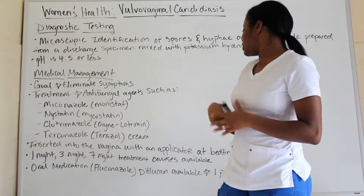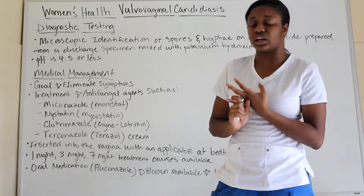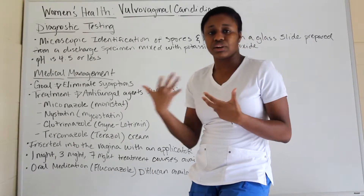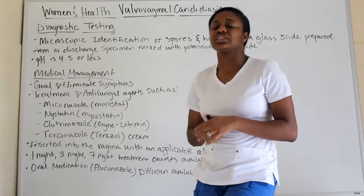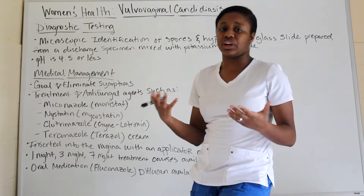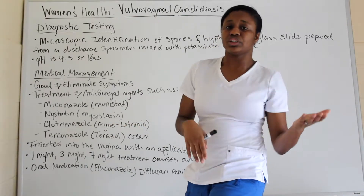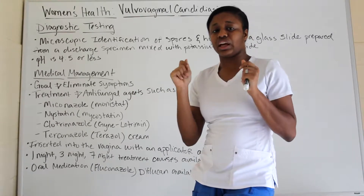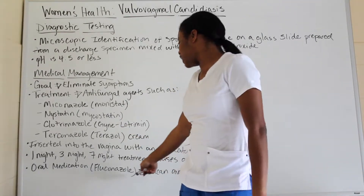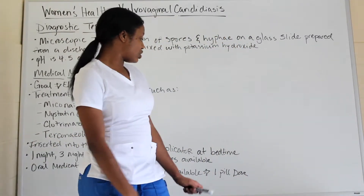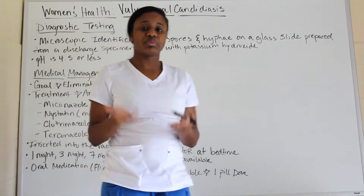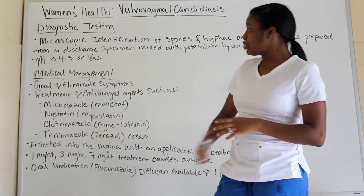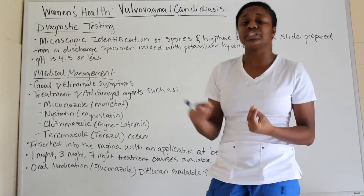You insert the medication into the vagina with an applicator at bedtime. You can have a one-night, three-night, or seven-night course of treatment as a vaginal suppository. Most women tend to go for the one-night option because it's convenient and there's better compliance — you don't have to worry about forgetting a dose. You also have oral medication: Diflucan, which is another antifungal available as a single-pill dose.